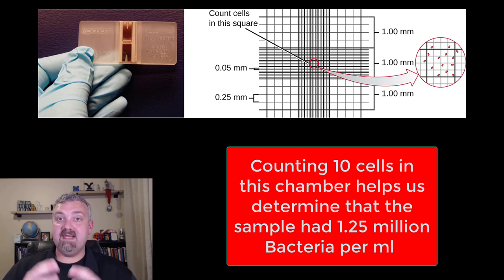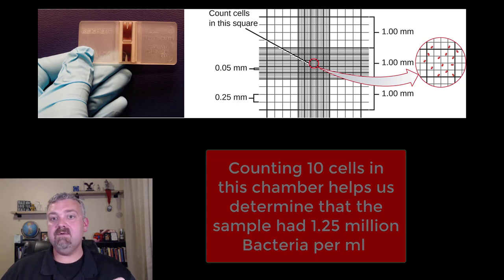So you take a tiny bit of the sample and count and then you try to determine how big the overall sample is from there. So that would be a direct cell count.